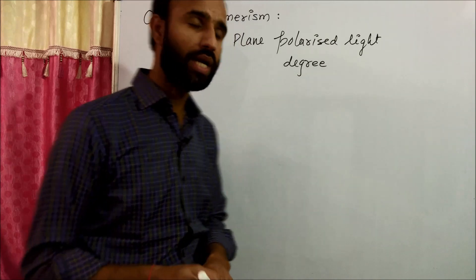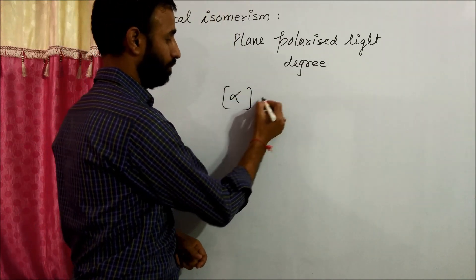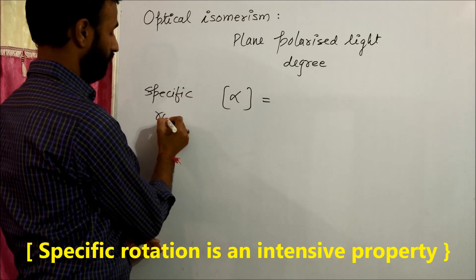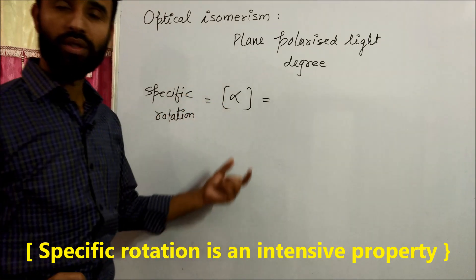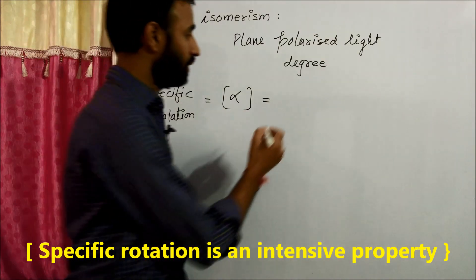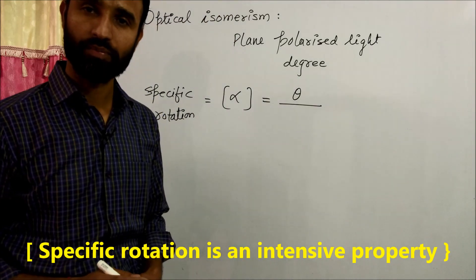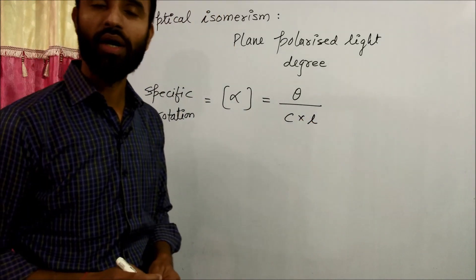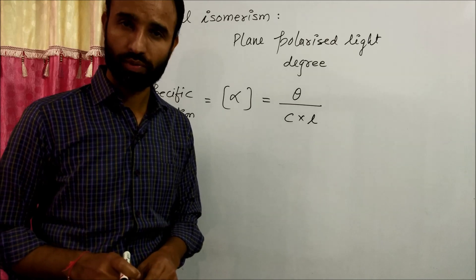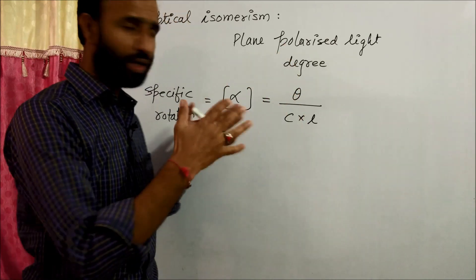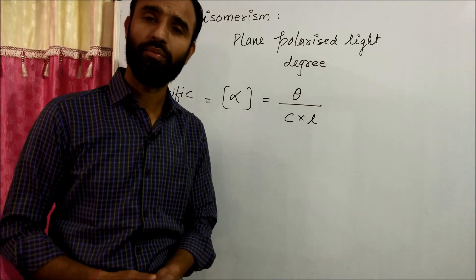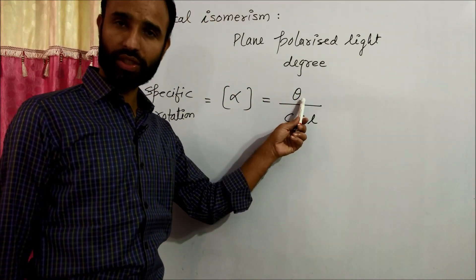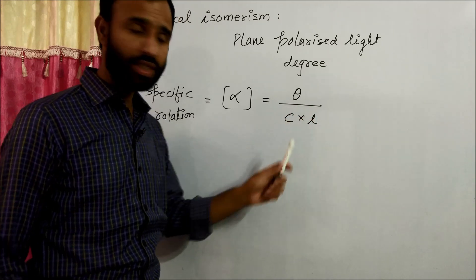In order to place the angle of rotation on a standard basis, chemists calculate specific rotation. Specific rotation is denoted by alpha and is equal to angle of rotation divided by concentration multiplied by the length of the polarimeter tube. You can view my previous video on the polarimeter.